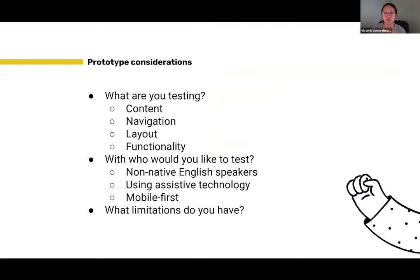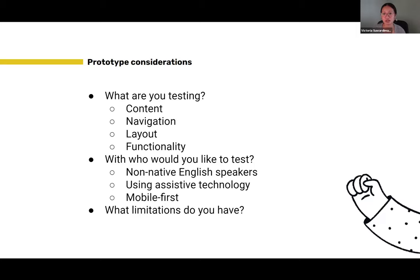When creating prototypes and doing testing, there are some key questions to think about: What are you testing? Content, navigation, layout, functionality — these mean different things. Functionality might be tough to test on paper prototypes. Who would you like to test with? For example, mobile-first testing means you need mobile devices and need to see how people interact with them. It really depends on what you're testing, who you're testing with, and your limitations — maybe you don't have capacity to build a live prototype right now. You can quickly get something on paper prototypes, run sessions with those, and iterate. Your goals, limitations, and who and what you're testing all determine the right prototype type. The main thing is to make sure you're testing.